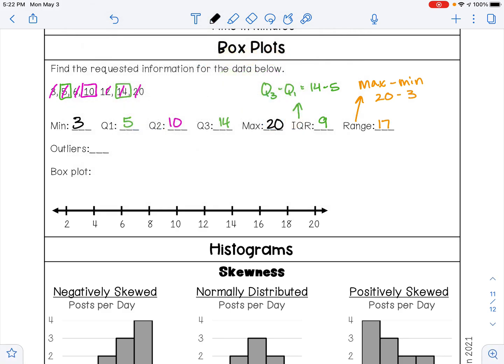To check to see if you have any outliers, you want to use the outlier formulas. So you will have an outlier if there is a data value below Q1 minus 1.5 times the IQR. And so in this problem that would be five minus 1.5 times nine. So in my calculator I'm just going to go ahead and do that and I get negative 8.5.